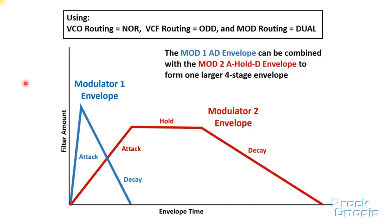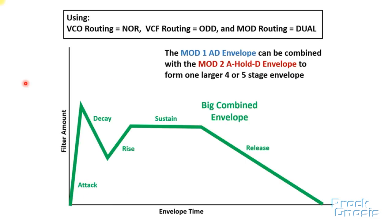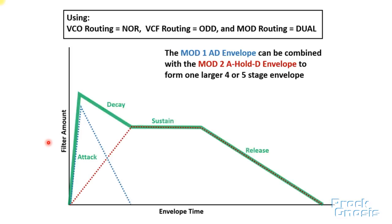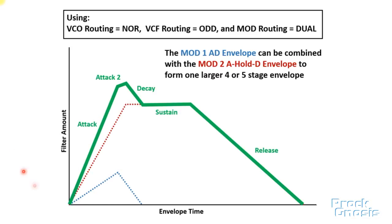Originally I thought when the modulators were combined they would produce an envelope from the higher of the Mod 1 and Mod 2 values — but I was wrong. Actually, the two values of Modulator 1 and Modulator 2 are added together, producing an envelope that looks more like a very nice ADSR envelope. You can also form something like a five-stage envelope, with two attack steps, a decay, a sustain, and a release stage — something you can't get out of the Erebus.